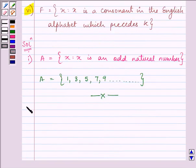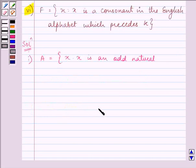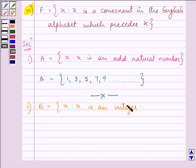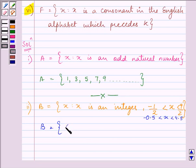Proceeding on with the second part. Now we are given B is equal to x such that x is an integer, minus 1 by 2 is less than x is less than 9 by 2. So we will write all the integers between minus 1 by 2 and 9 by 2. So that will be if we write it in decimal, this is minus 0.5 and this is 4.5. So moving on in our number line, we have 0, 1, 2, 3, 4 and we cannot write 5 because x need to be less than 4.5. That means 5 is not included over here. So this becomes the answer of our second part.